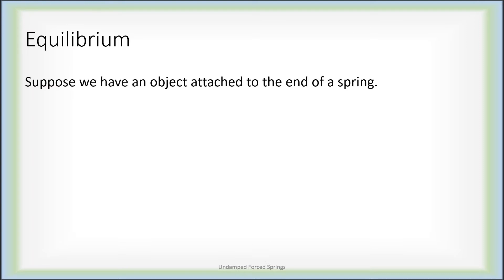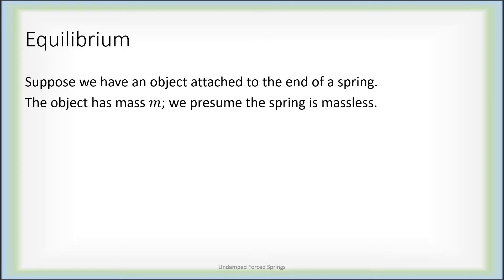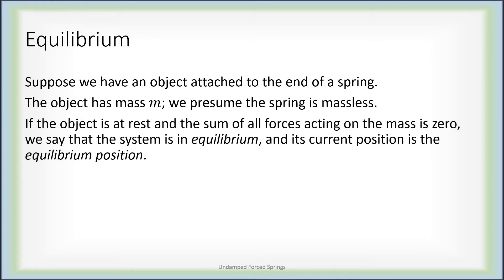Let's talk about the equilibrium of an object attached to the end of a spring. Suppose we have an object that has mass m, and we're going to presume the spring itself does not have mass. If the object is at rest and the sum of all forces acting on the mass is zero, the system is said to be in equilibrium. The object isn't moving, there is no net force, and we call that the equilibrium position.